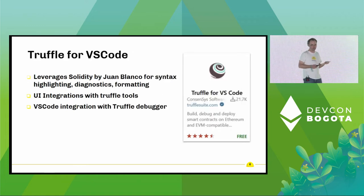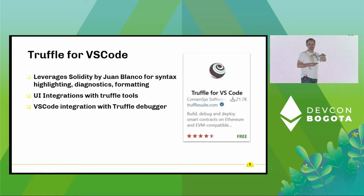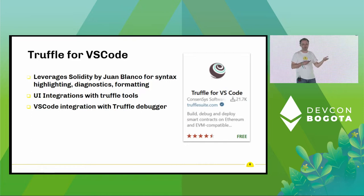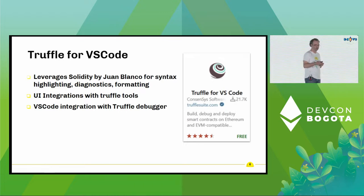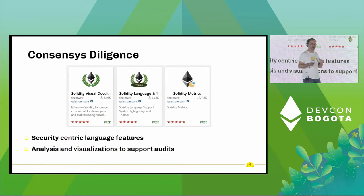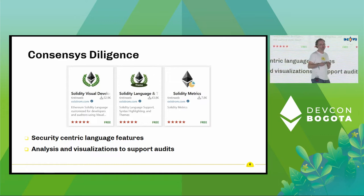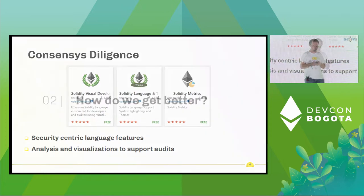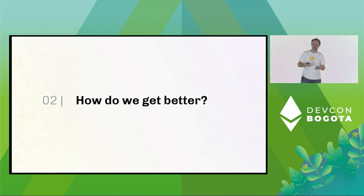Next, we have Truffle for VS Code. This leverages Solidity by Juan Blanco for the syntax highlighting, diagnostics, etc., but adds a layer of UI integrations into the Truffle tools suite, so that you can run and compile through the UI, through the task subsystem in VS Code, for example. That's great for onboarding if you're new to Truffle or you prefer the UI to the CLI. One other really cool feature is integration with the Truffle debugger. I also wanted to mention that the diligence team at ConsenSys has a suite of extensions that are security-centric — they're going to give you analysis and visualizations when you're doing a smart contract audit. Plenty of options for Solidity then, with lots of great programmers pushing the ecosystem forward.